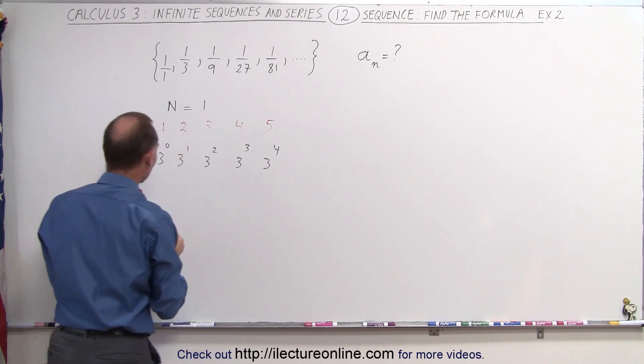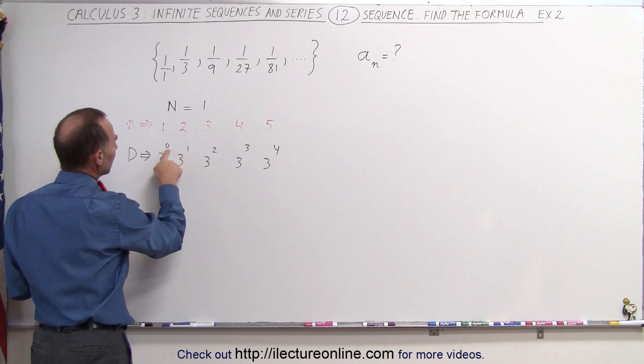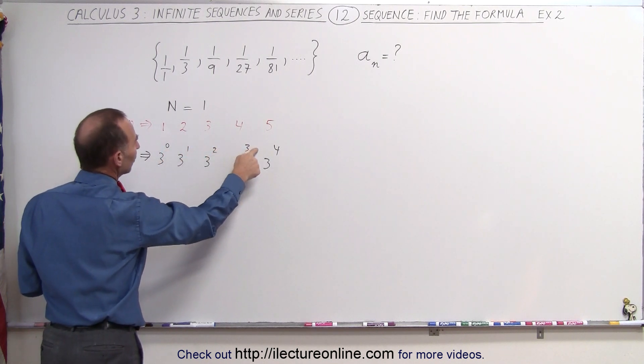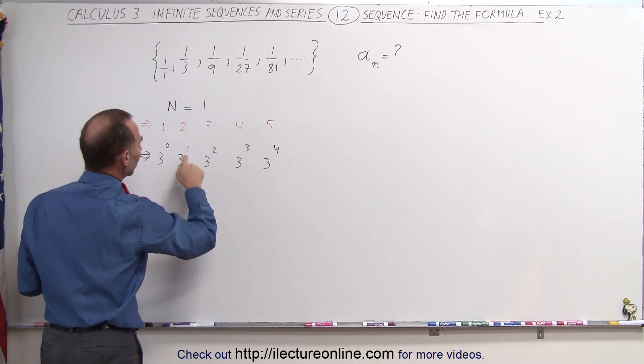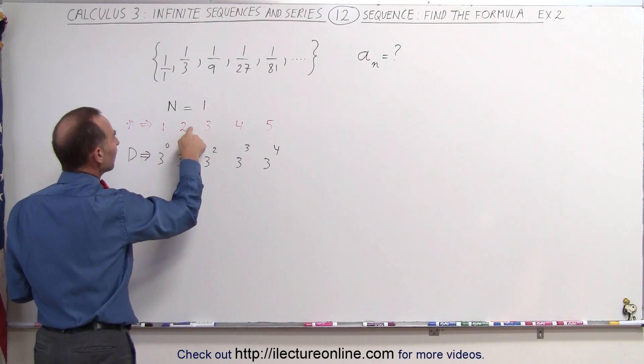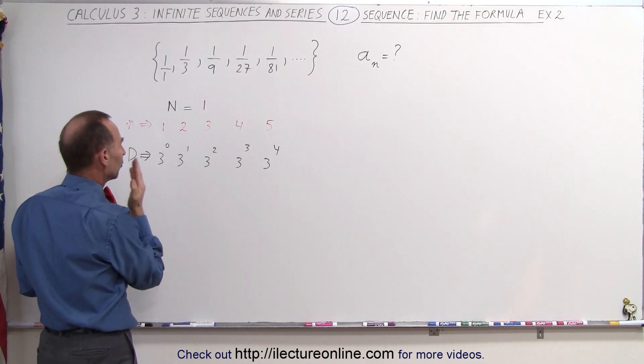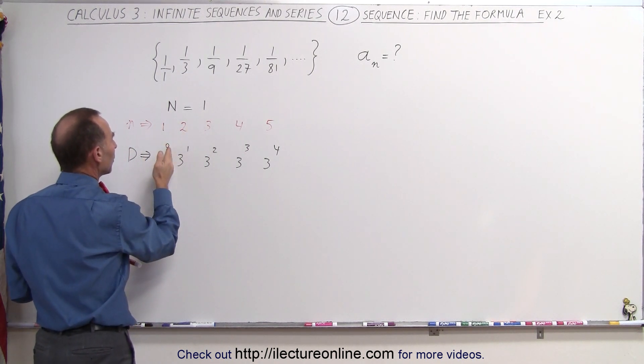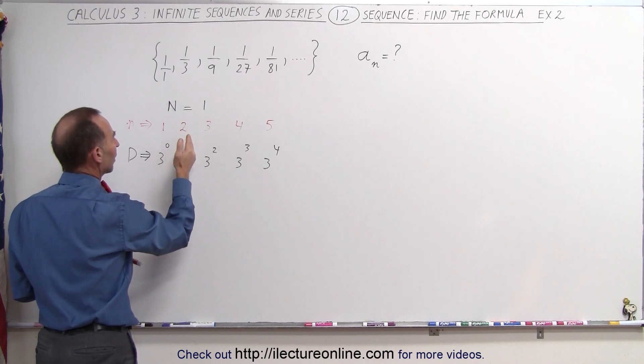But there it's equal to 5. So notice that the exponents here, to come up with the value of the denominator, is offset by the n by 1. So if n is equal to 1, the exponent is 0. If n is equal to 2, the exponent is 1.